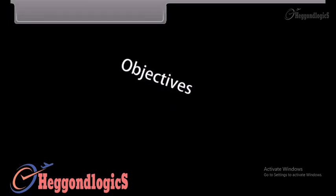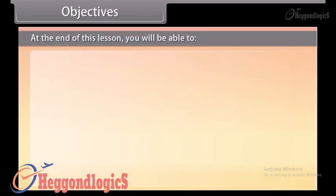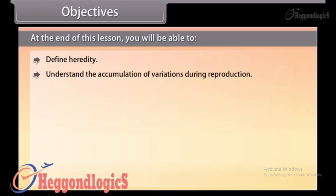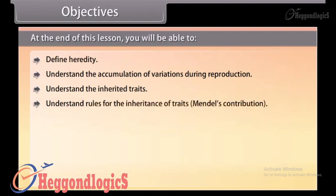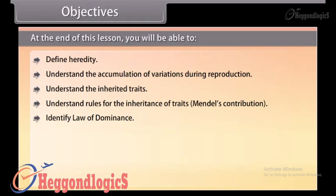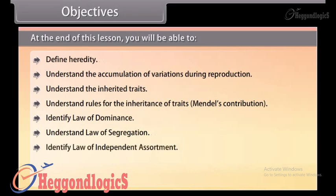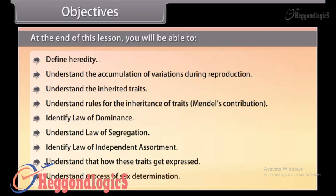At the end of this lesson, you'll be able to: define heredity; understand the accumulation of variations during reproduction; understand inherited traits; understand rules for the inheritance of traits and Mendel's contribution; identify the law of dominance; understand the law of segregation; identify the law of independent assortment; understand how these traits get expressed; and understand the process of sex determination.